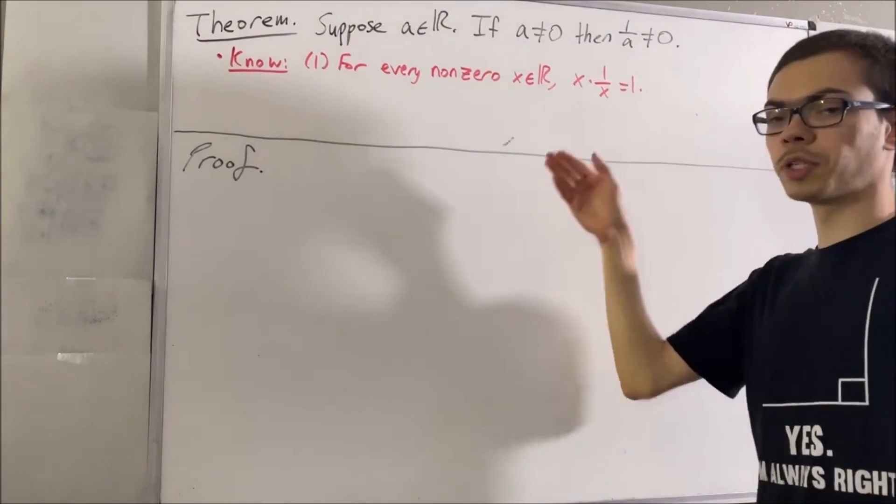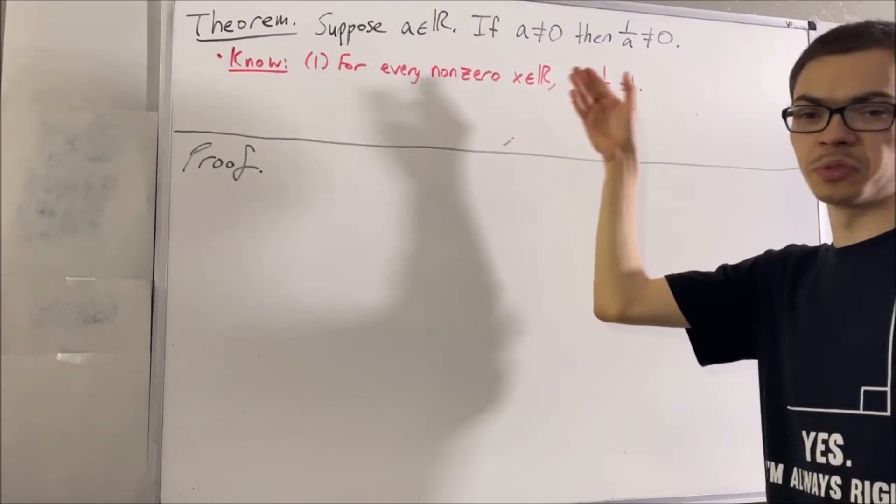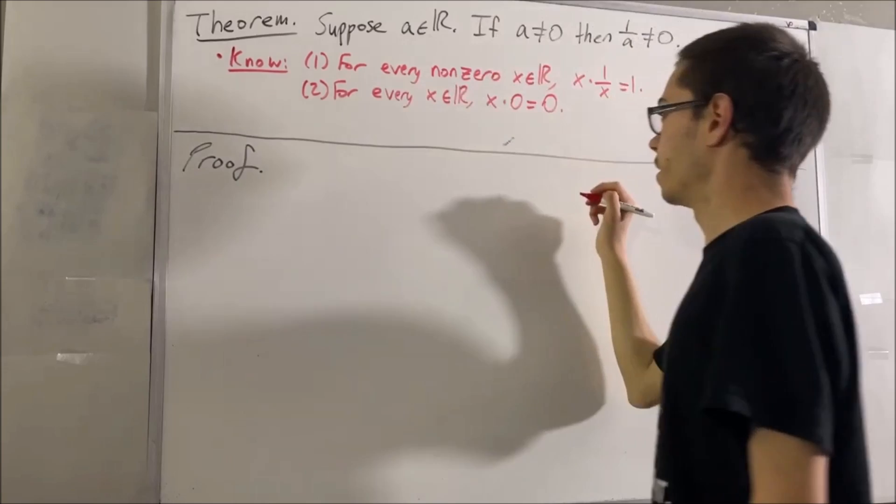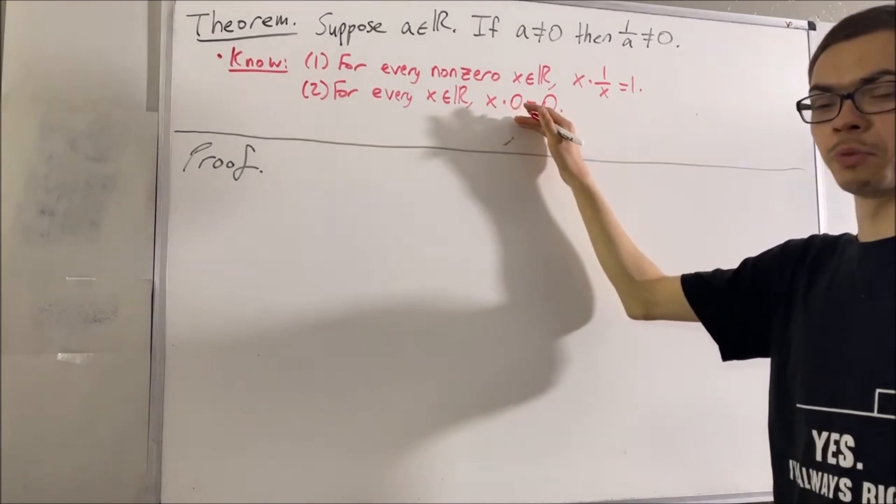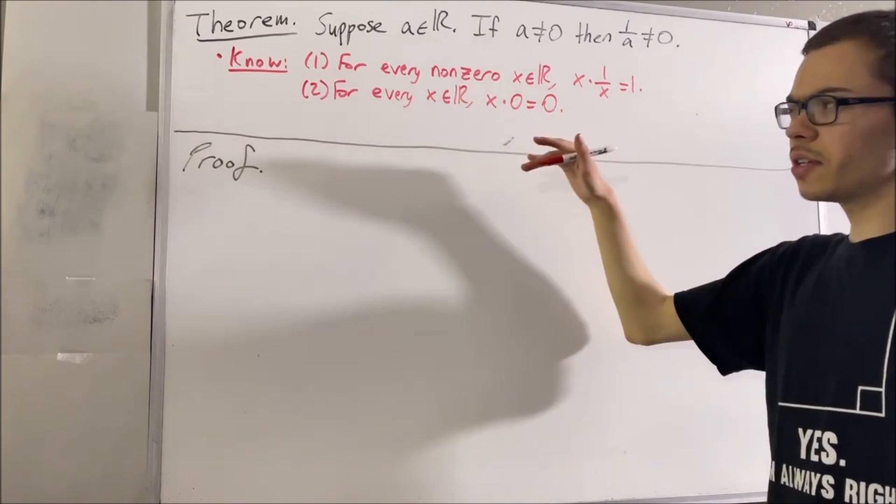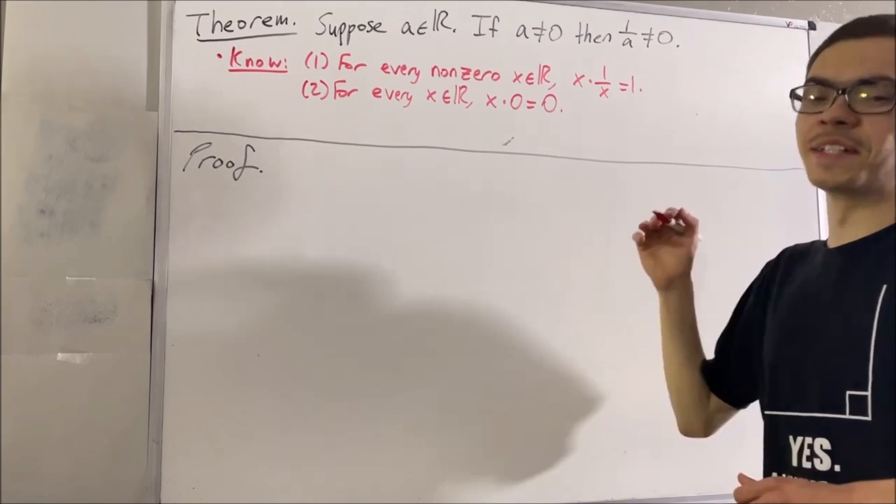The second is for every real number x, x times zero is equal to zero. This fact can be deduced from the field properties of the real numbers. In fact, I made a recent video proving this. And the third is that one is not equal to zero.